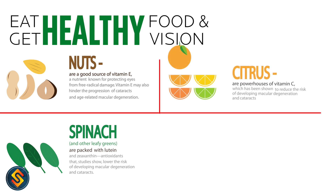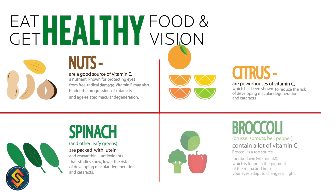Citrus fruits are powerhouses of vitamin C, which has been shown to reduce the risk of developing macular degeneration and cataracts. Broccoli, Brussels sprouts, and bell pepper contain a lot of vitamin C. Broccoli is also a top source of riboflavin (vitamin B2), which is found in the pigment of the retina and helps your eyes adapt to changes in light.